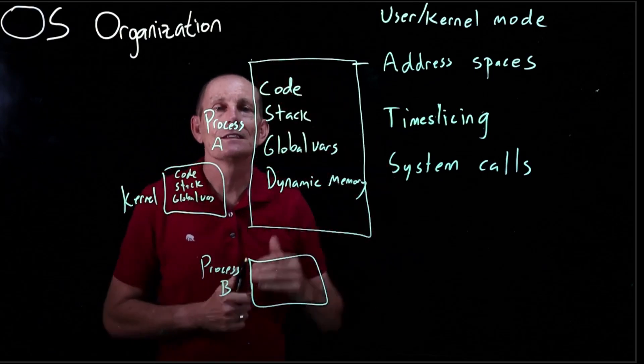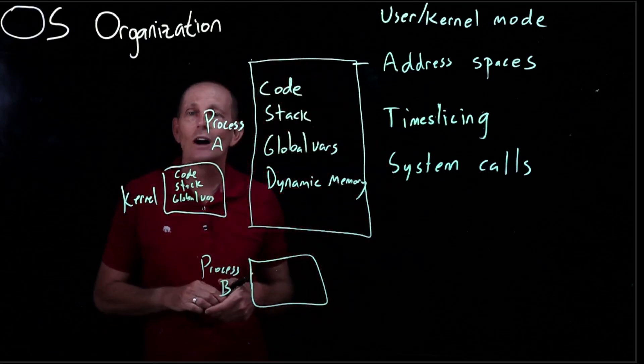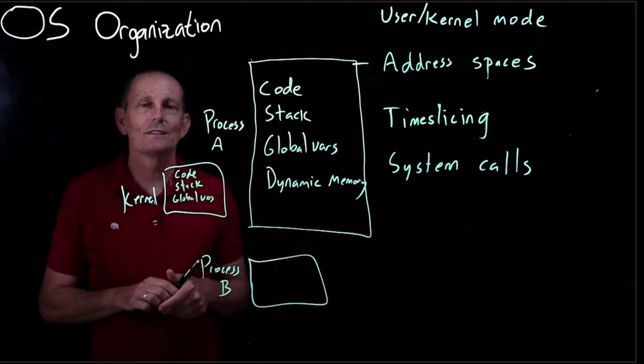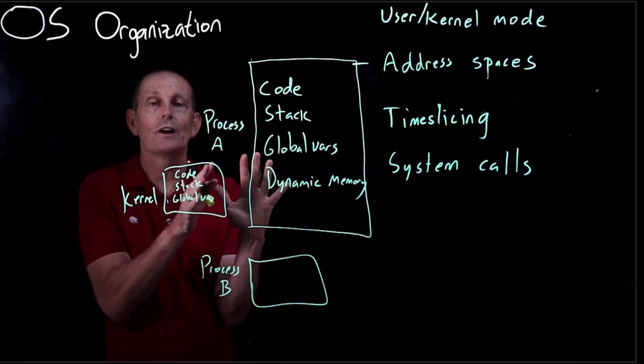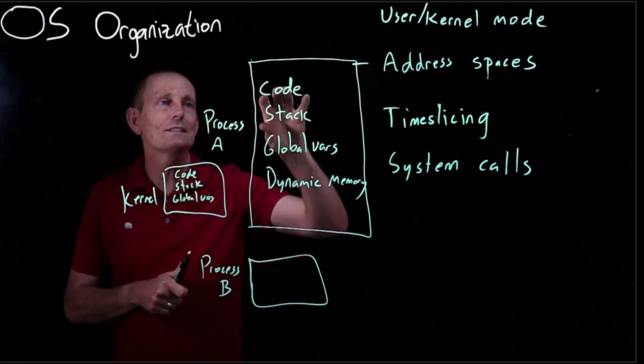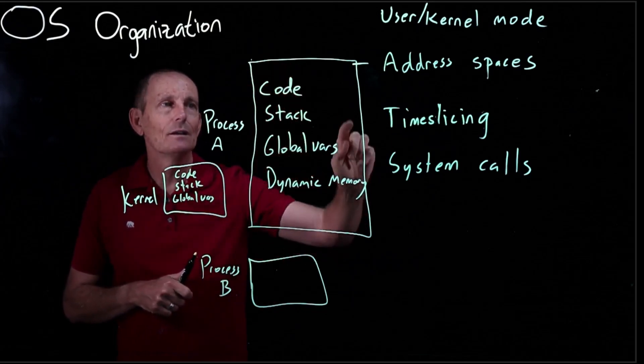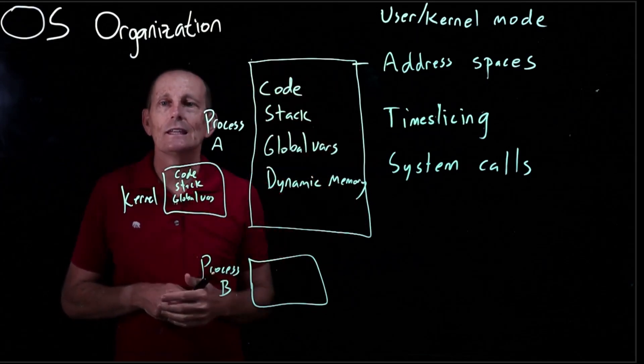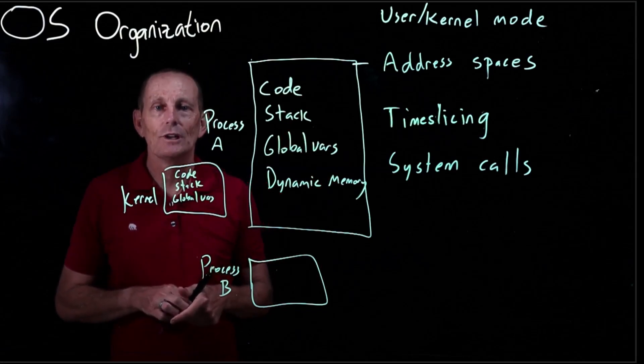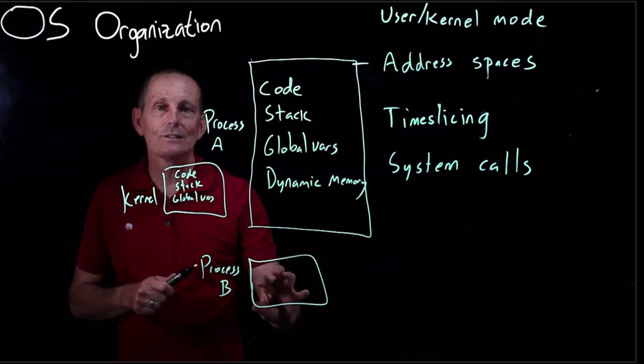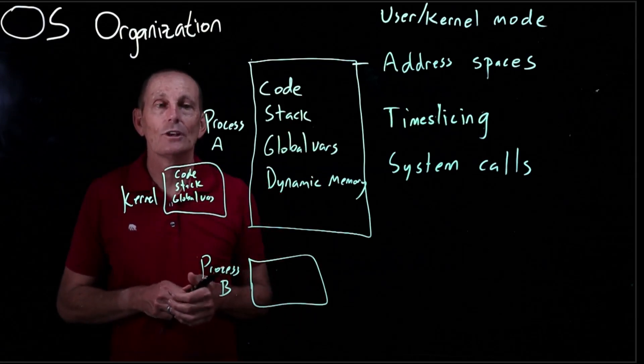And that's this idea of we're going to provide the process this constrained environment where it only has read-write access to the memory that contains its information. And it doesn't have read-write access to the memory containing process B's information or the kernel's information.